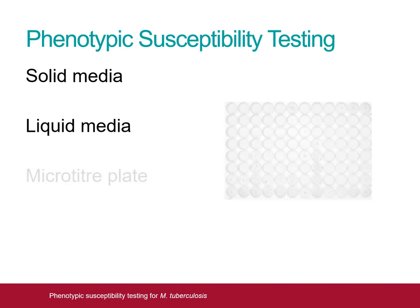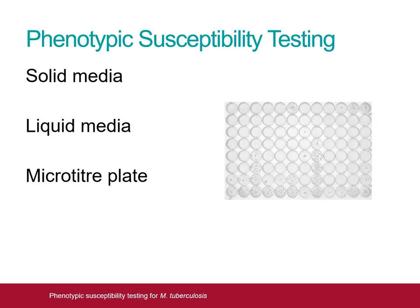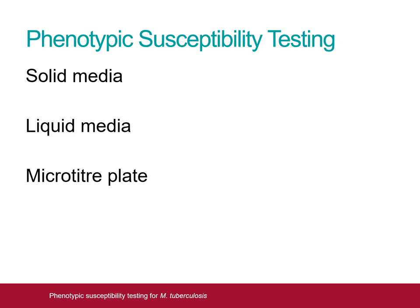An unchanged growth rate indicates drug resistance. Finally, microtiter plates can be used to establish minimum inhibitory concentrations for antituberculous agents, as is performed routinely for many other bacterial species. The NMRS uses a combination of solid and liquid media techniques, though this is currently changing as we will discuss later.